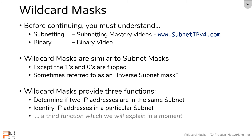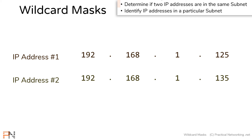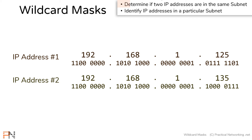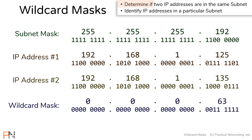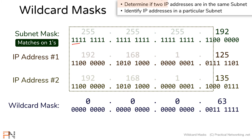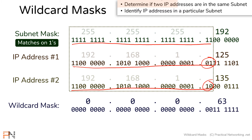Let's use a wildcard mask to determine if two IP addresses are in the same subnet. Here are two IP addresses: 192.168.1.125 and 192.168.1.135. If we translate both into binary, we get something that looks like this. To see if both are in the same subnet we need a subnet mask or CIDR notation. When using a subnet mask, we look for matches in every column where there's a one. We can see we don't have a match in every single column, which tells us these two IP addresses are not in the same subnet.